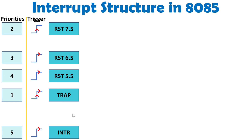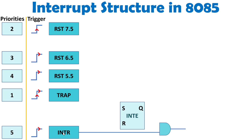Now let us understand how services will be provided by 8085 whenever an interrupt arises. First, I will talk about the INTR interrupt. Whenever a level trigger interrupt arises from an external device with INTR, there will be logic 1, but it doesn't mean that INTR will get served. As INTR has the least priority, there are other conditions we need to check. The interrupt enable flip-flop must give logic 1 to the AND gate. When both inputs are logic 1, there will be interrupt enable with INTR.